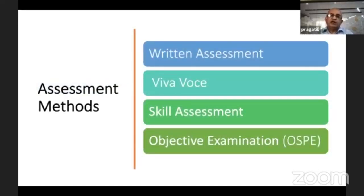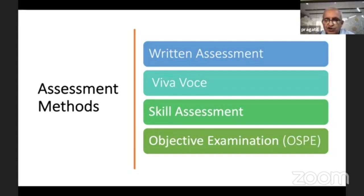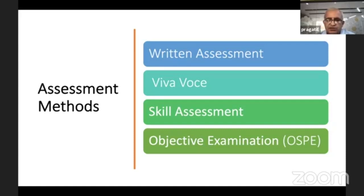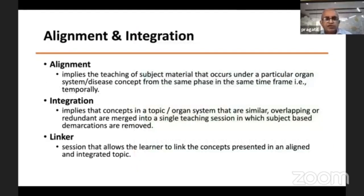The next component of any competency is assessment methods. Four assessment methods are given: written assessment (theoretical), viva voce, skill assessment (practical), and OSPE — Objective Structured Practical Examination. Previously in traditional teaching, viva voce marks were added to the theory paper, but in CBME, viva voce marks are added to the practical examination.